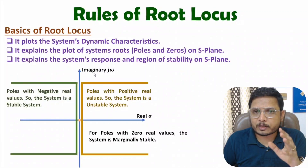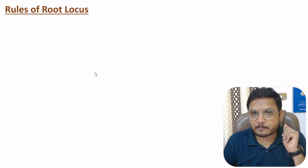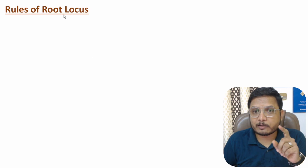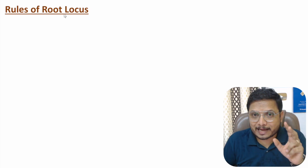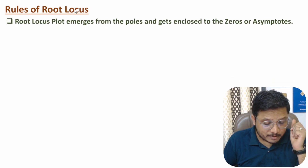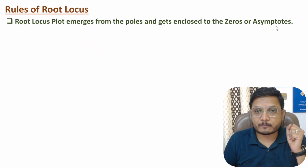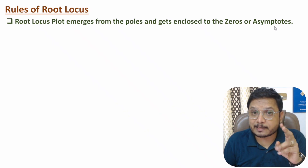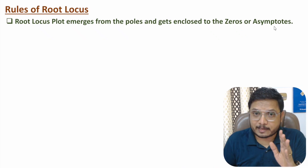To plot root locus you need to understand some standard rules. The root locus plot is based on the poles and zeros of the system. You will be drawing lines which emerge from the poles and get enclosed to zeros or asymptotes. Always remember: lines in the root locus emerge from the poles and get enclosed to a zero or an asymptote.